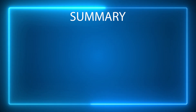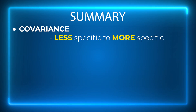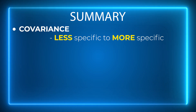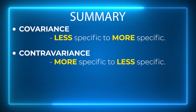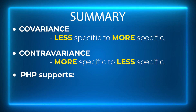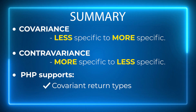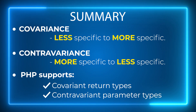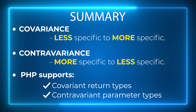To sum it all up: going from less specific to more specific is covariance, and going from more specific to less specific is contravariance. In PHP, covariant return types and contravariant parameter types are supported.